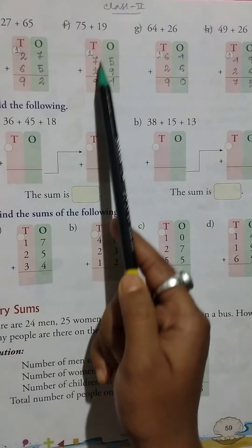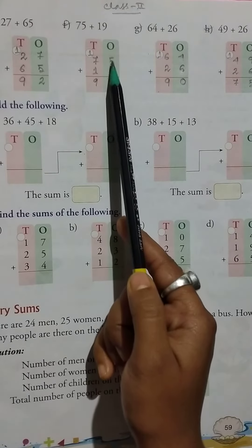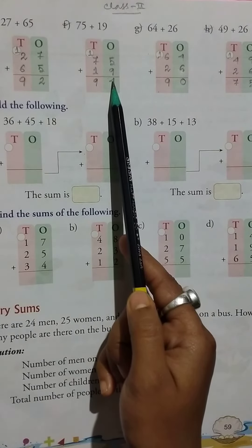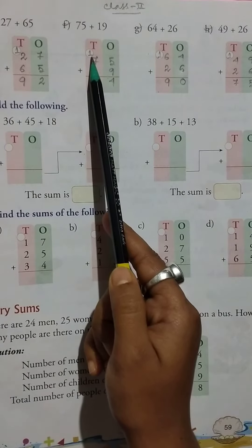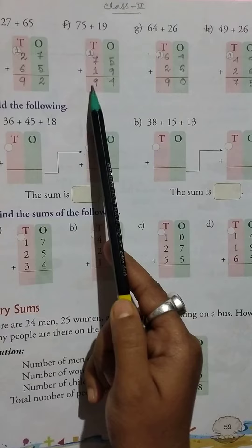Then 75 plus 19 equals 94. Here 9 plus 5 equals 14, write 4 here and carry 1. So 1 plus 7 here is 8, then 8 plus 1 equals 9.